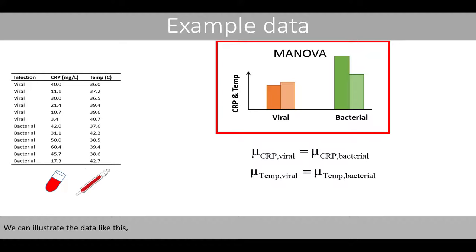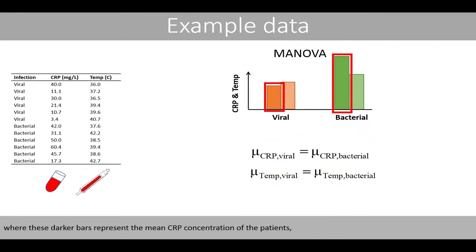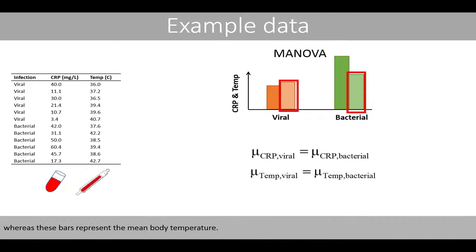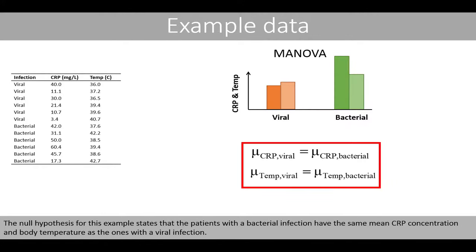We can illustrate the data like this, where the darker bars represent the mean C-reactive protein concentration of the patients, whereas the other bars represent the mean body temperature. The null hypothesis for this example states that the patients with a bacterial infection have the same mean C-reactive concentration and body temperature as the ones with a viral infection.